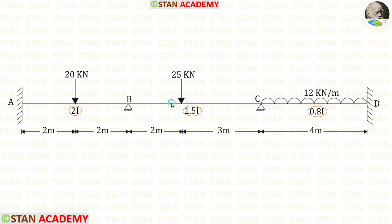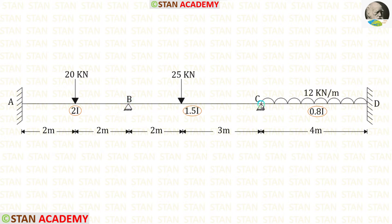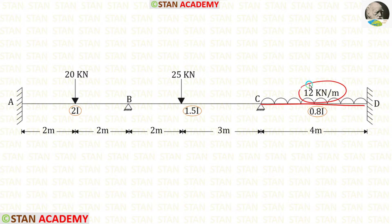In span BC, we have an eccentric point load of 25 kilo Newton, acting at a distance of 2 meters from point B. In span CD, we have a uniformly distributed load of 10 kilo Newton per meter acting for the full span.